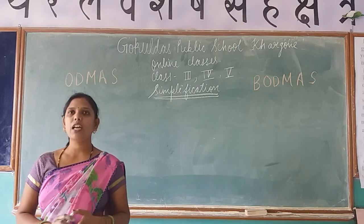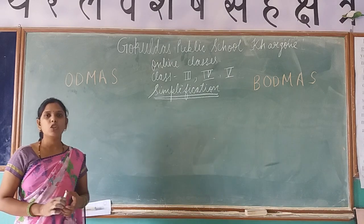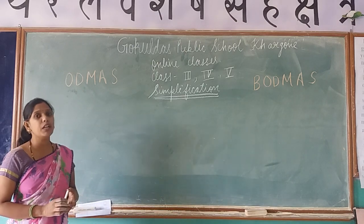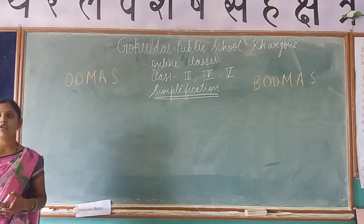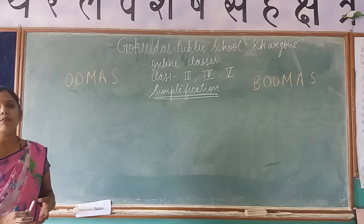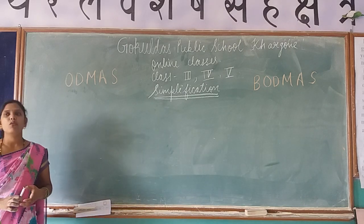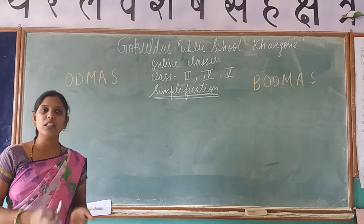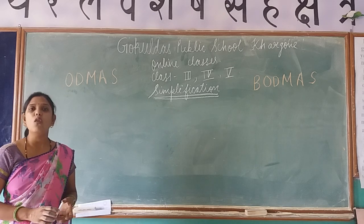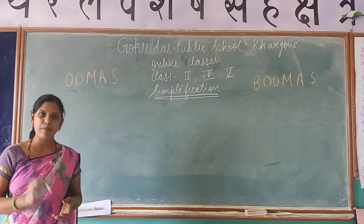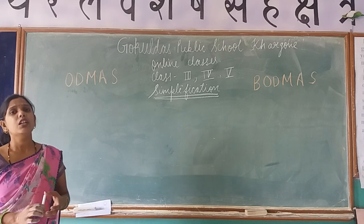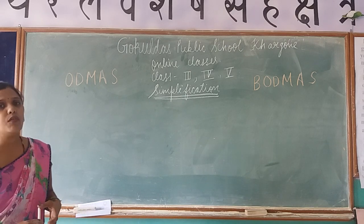In my last lecture, I explained the 4 basic operations of mathematics that we generally use: addition, subtraction, multiplication and division. How to solve questions if addition, subtraction, multiplication and division occur in a single question. But if a question contains all four — a plus sign, minus sign, multiplication sign and division sign — how do we solve these types of questions?